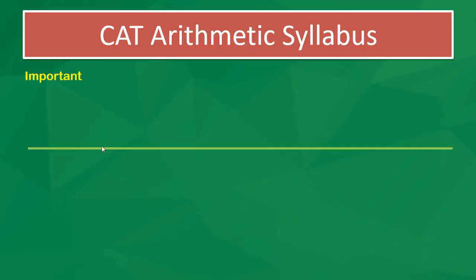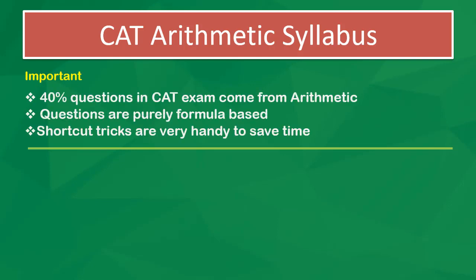We will talk about CAT arithmetic syllabus and some of the important topics that you have to focus on in the arithmetic syllabus. So 40% questions in CAT exam — when we say CAT exam, we talk about the arithmetic section particularly — come from the quantitative aptitude section. Questions are purely formula based.